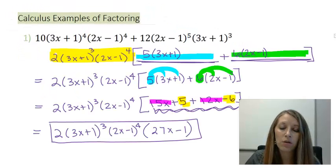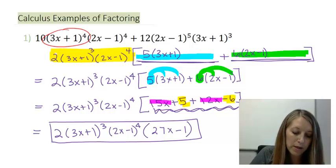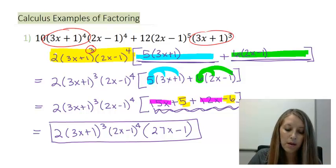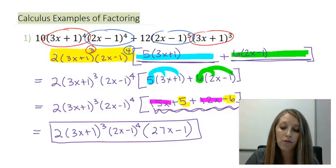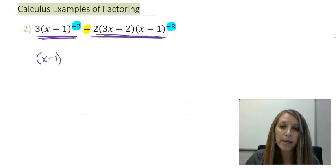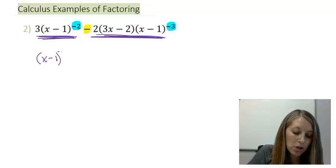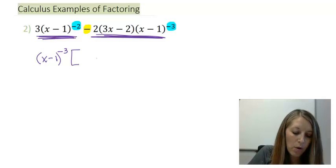It follows the same method as before — we always factor out the smallest amount. In my last example, with 3x plus 1s I had 4 and 3, so I took out the smallest amount of 3. With 2x minus 1s I had 4 and 5, so I took out the smallest of 4. So I'm going to take out my smallest amount here, remembering that when we have negative exponents, it's actually the larger number. So I'm going to factor out negative 3 of these.